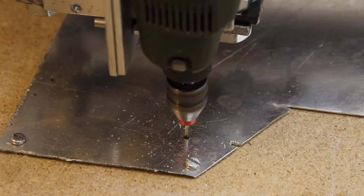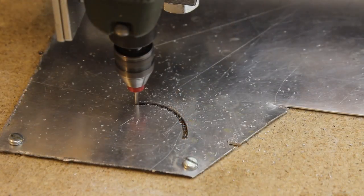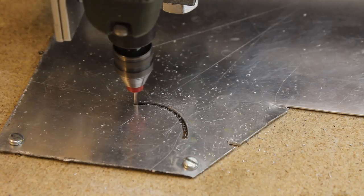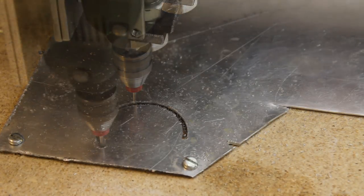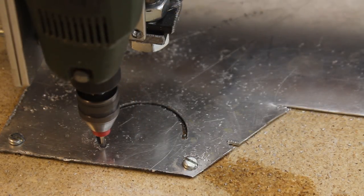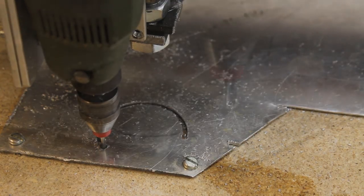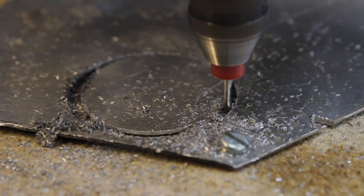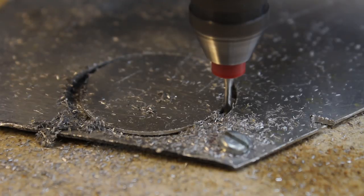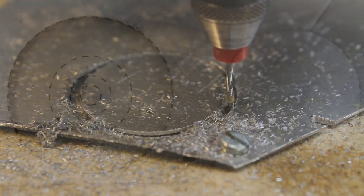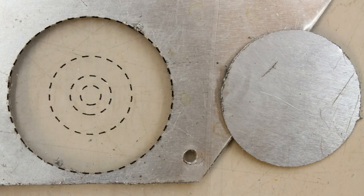Besides acrylic plastic, the machine can also cut 0.8mm aluminum plates. I have not tested any other materials yet. As mentioned before, you can get more information on the project page. Thanks for watching and I'll be back!